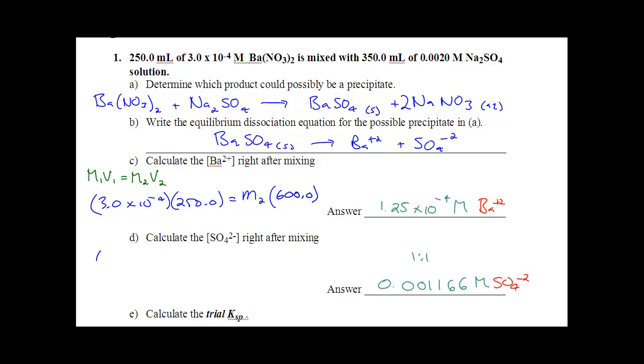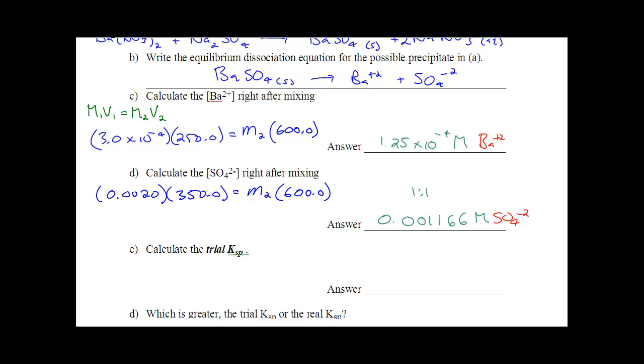The Na2SO4, you're starting off with 0.0020 molar, 350 milliliters of it. Get me the new molarity, and the volume after mixing is still 600. That's going to give you the concentration of Na2SO4, but it's a 1 to 1 ratio to the SO4. So these are now the concentrations of the ions.